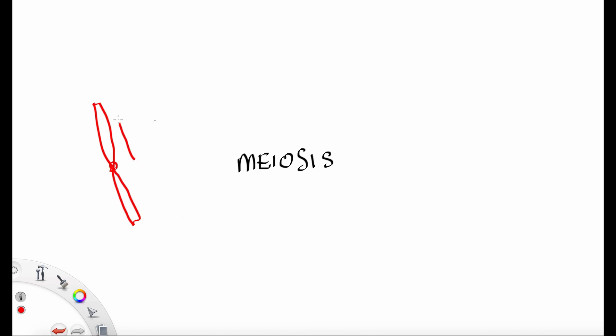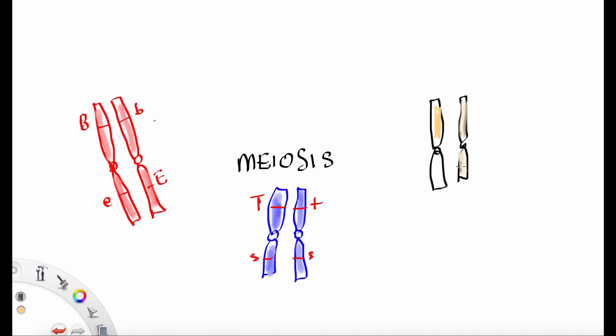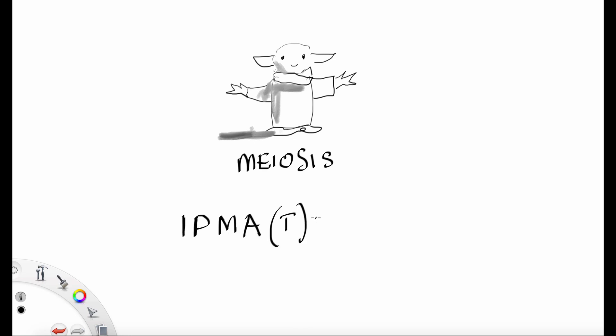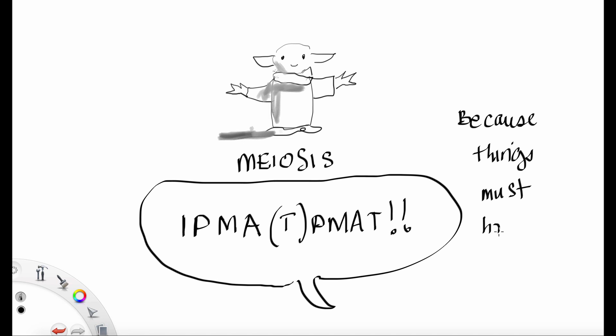The next review is on meiosis. And with meiosis, remember, we've got 6 chromatids that code for the head, and the torso, and the feet. So the stages of meiosis is IPMAT, PMAT, because things have to happen twice.